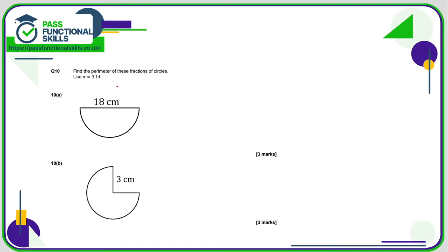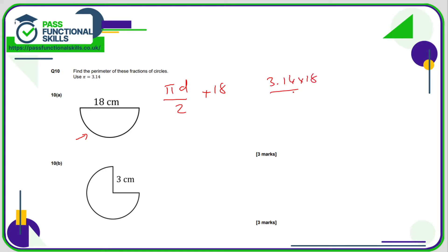In question 10, we're working out the perimeter of semicircles and three-quarter circles. For 10a, it's a semicircle, so it's 18 plus half a circumference. The formula for circumference is pi times the diameter, so we want pi times the diameter divided by 2, then add the 18. So: 3.14 times 18 divided by 2, plus 18.